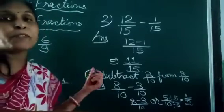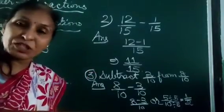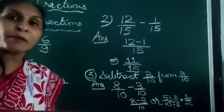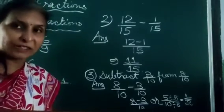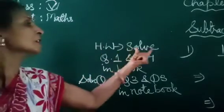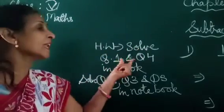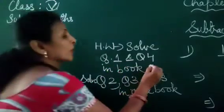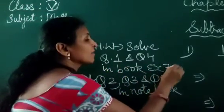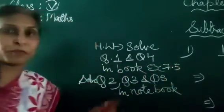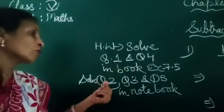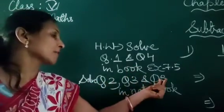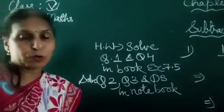In this way we solve addition of like fractions and subtraction of like fractions. For homework, solve question number 1 and question number 4 in the book, Exercise 7.5. Also solve question number 2, question number 3, and question number 5 in your notebook. Do your homework.